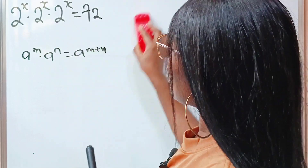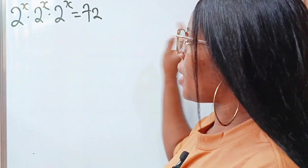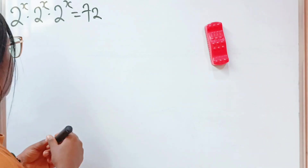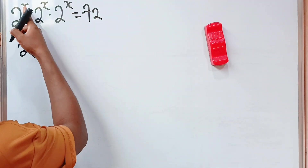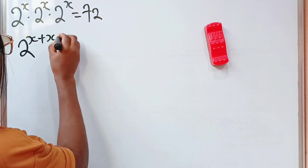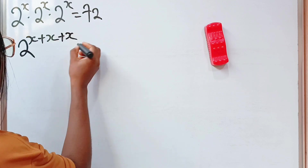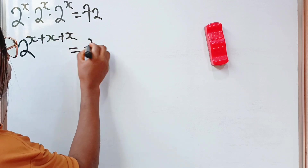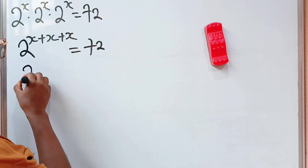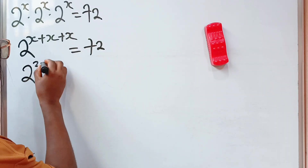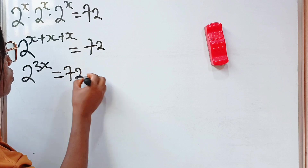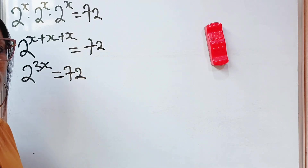So that means that we can write this as 2 to the power of x plus x plus x is equal to 72. So what we have is 2 to the power of 3x is equal to 72.